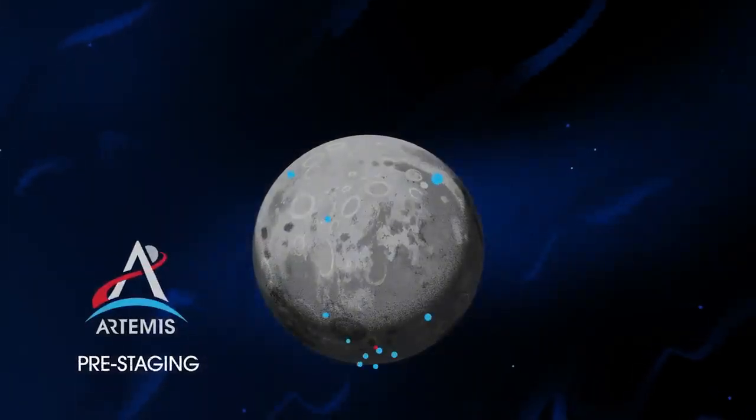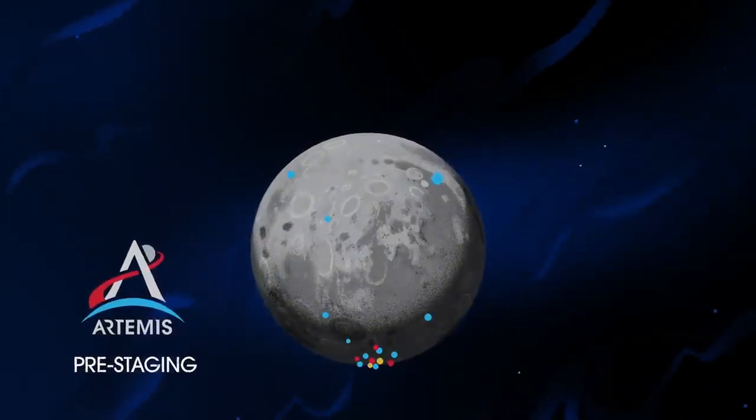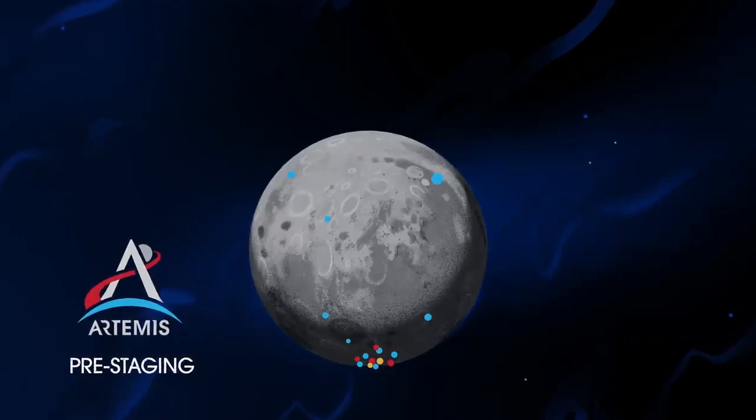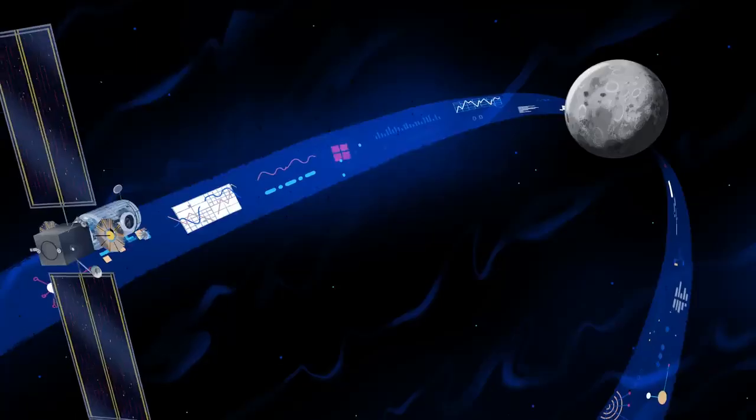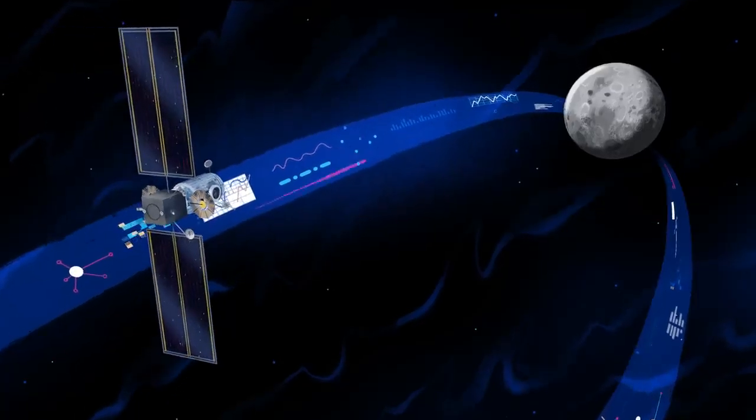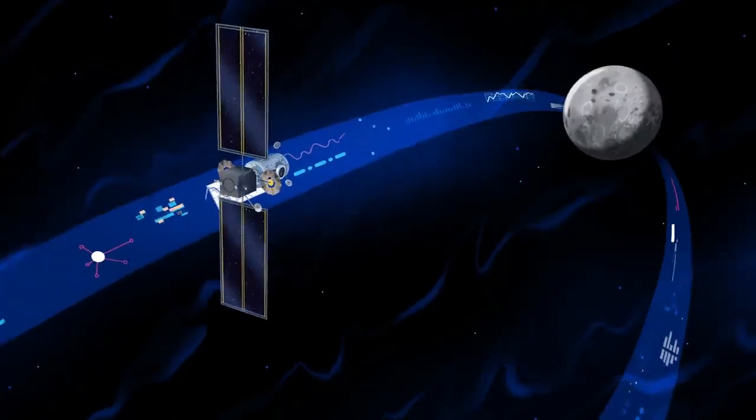Everything needed for lunar missions will be positioned in advance by commercial and international partners. This includes rovers, science experiments, and human-rated systems on the surface. But it also includes a dedicated lunar station in orbit around the Moon called Gateway.